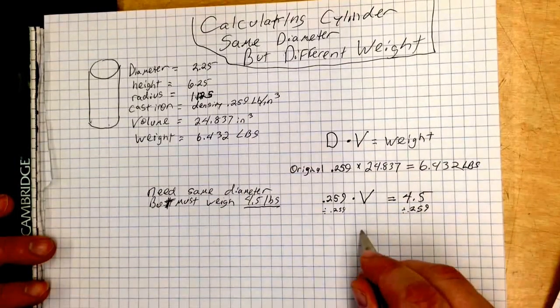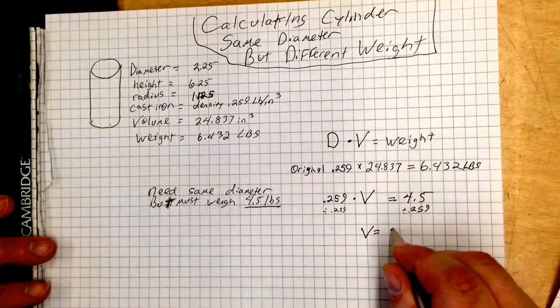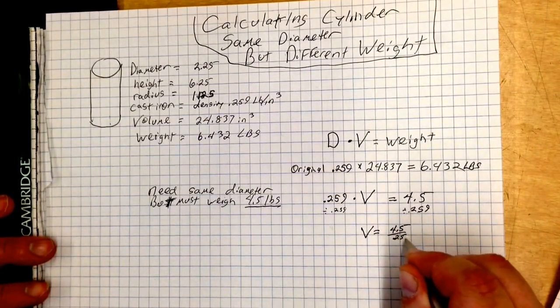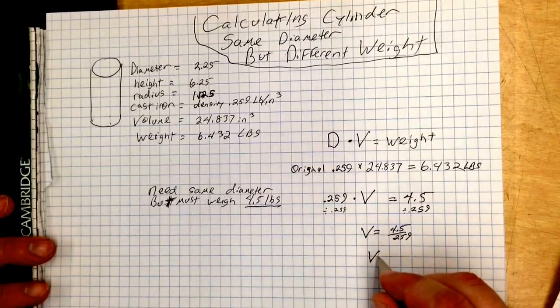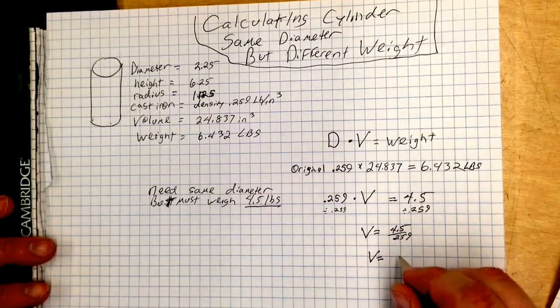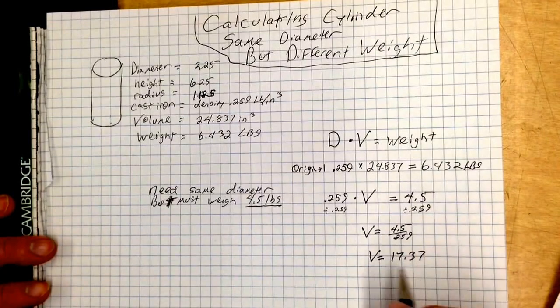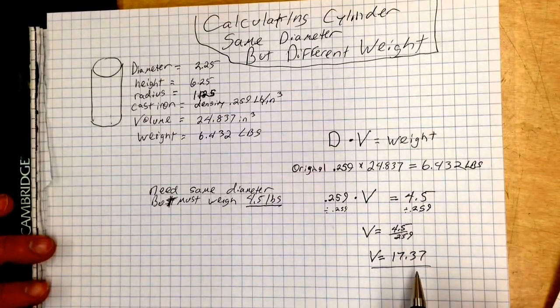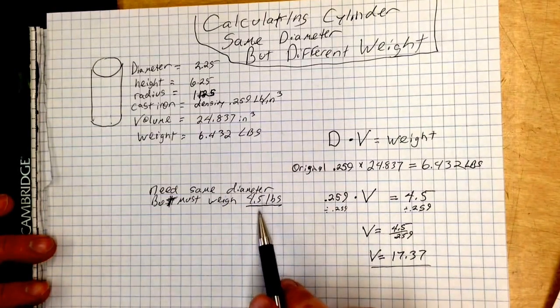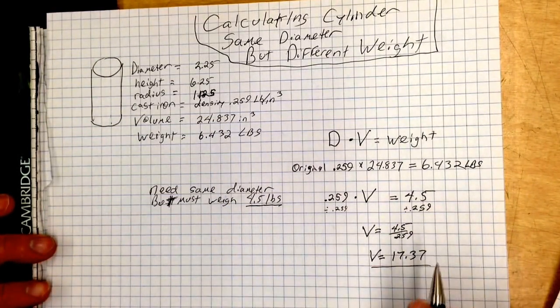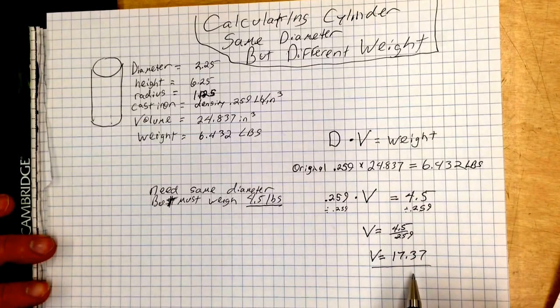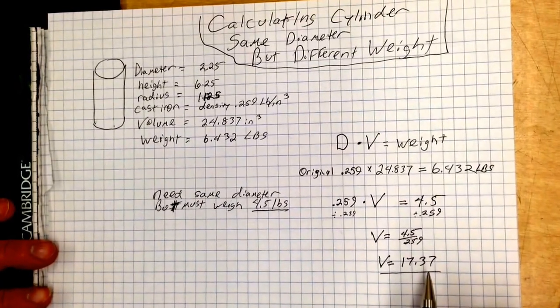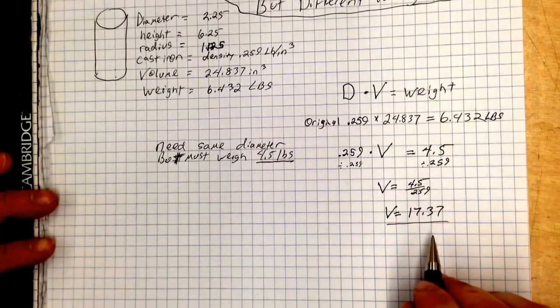And then we are left with volume equals 4.5 over 0.259, or volume equals 17.37. So we now know our volume for our item that weighs 4.5 pounds is 17.37. Now, here's where it gets a little bit tricky.